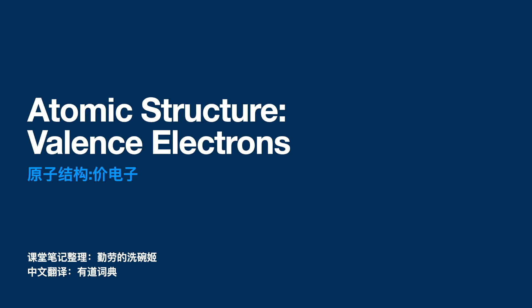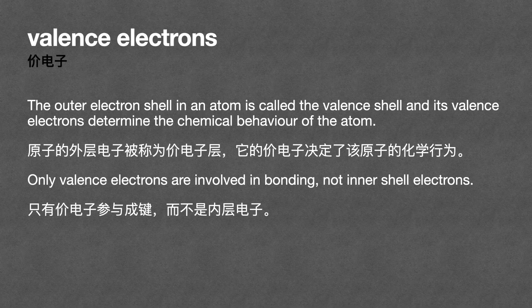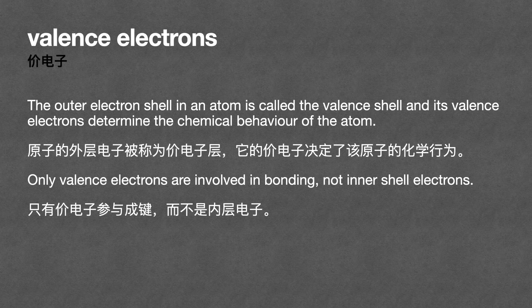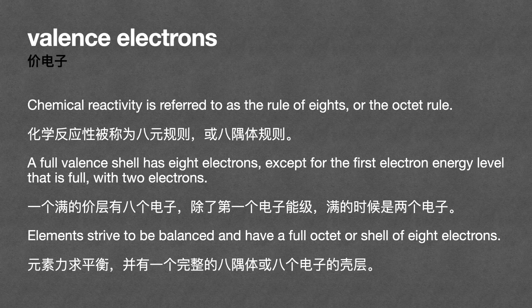The outer electron shell in an atom is called the valence shell, and its valence electrons determine the chemical behaviour of the atom. Only valence electrons are involved in bonding, not inner shell electrons. Chemical reactivity is referred to as the rule of eights, or the octet rule.